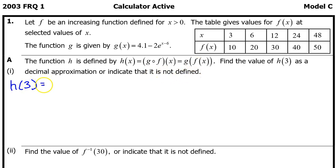h at 3 means plugging in 3 for x, so h at 3 will equal g at f at 3. Working from the inside out, let's see if we can find the value of f at 3. Looking at the table, f at 3 is 10, so this becomes g at 10.